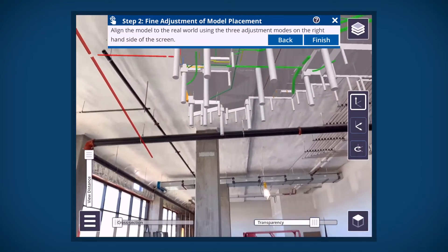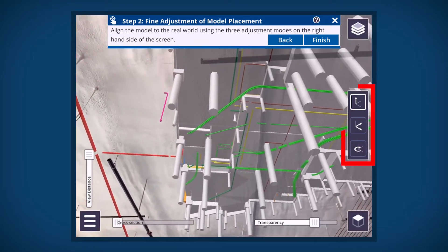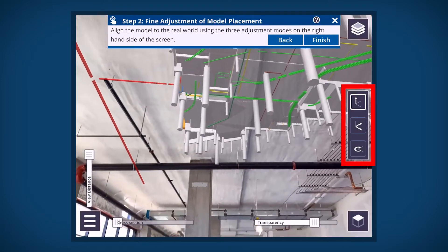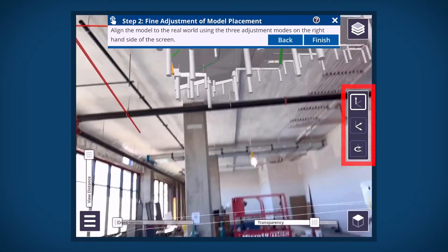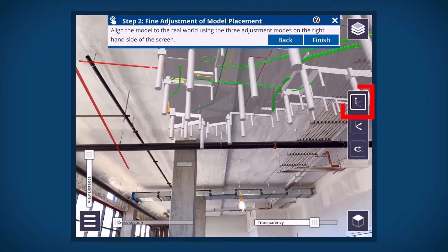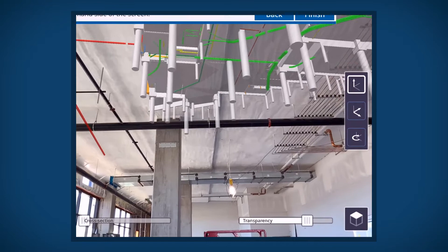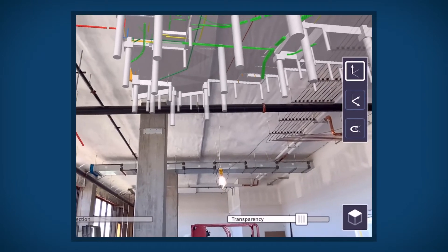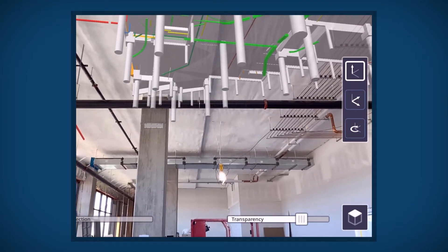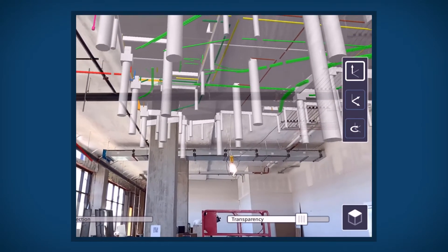In step two, align the model to the real world using three adjustment modes on the right-hand side of the screen. Start with the vertical alignment — it is important to get this correct before moving to other adjustments.